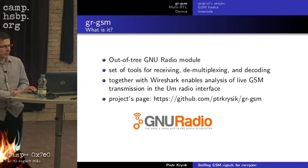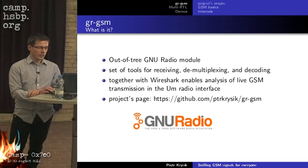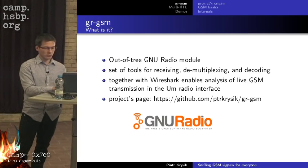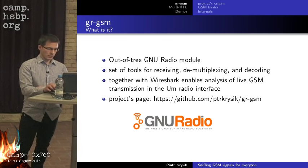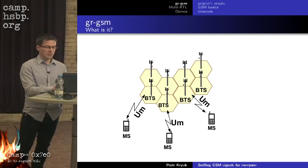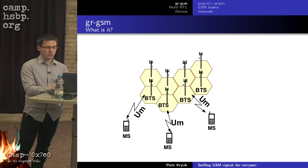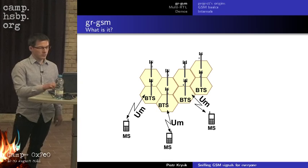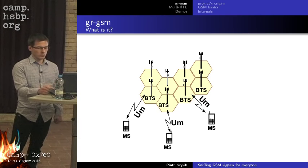Together with Wireshark, it enables live analysis of GSM transmissions, but also more. The project page is available if you want to visit it. The UM radio link is the link between mobile stations and base stations, and the GRGSM goal is to passively listen to this link.